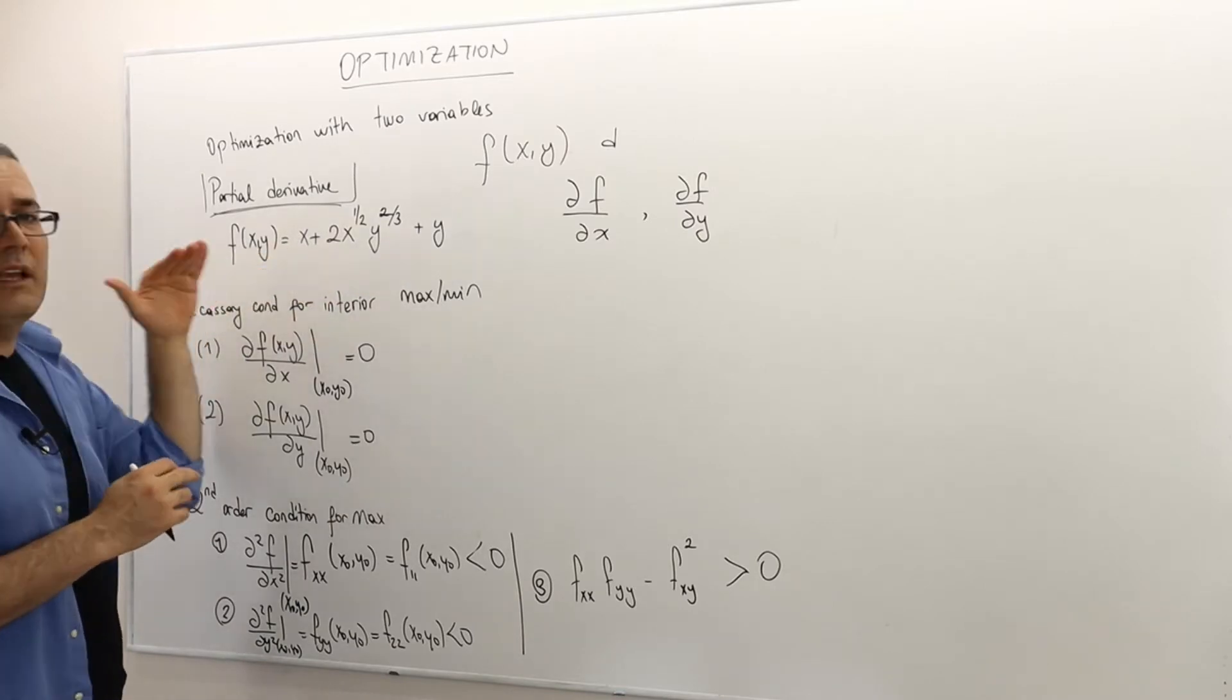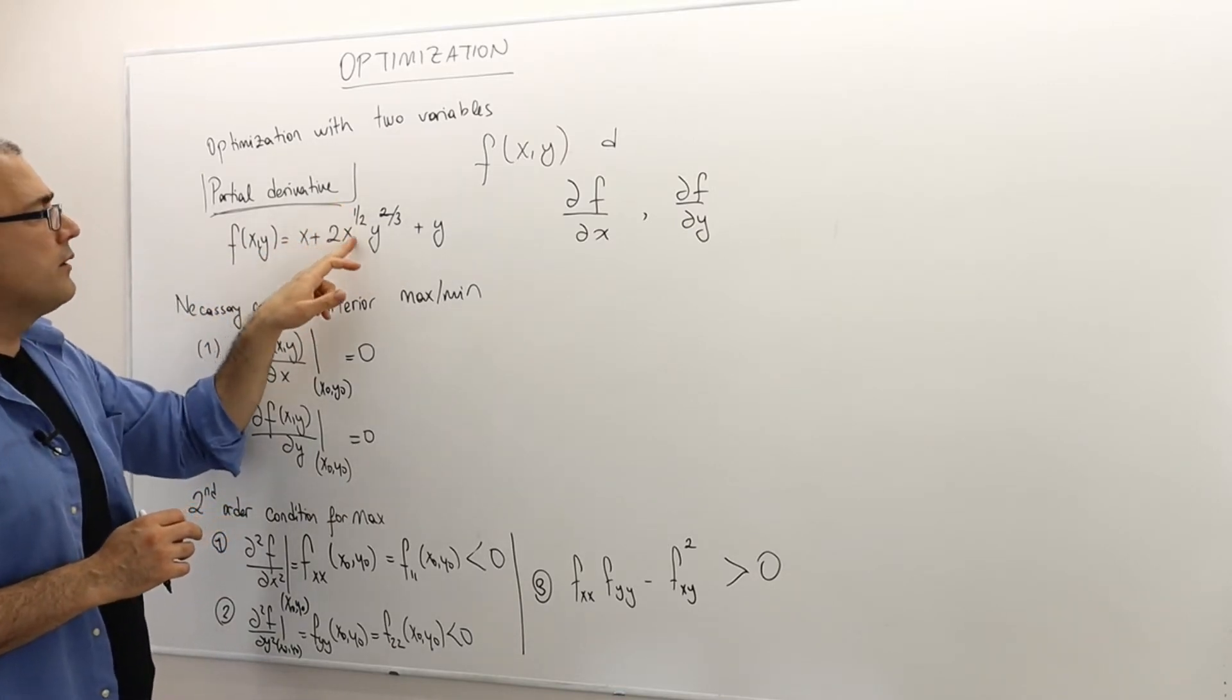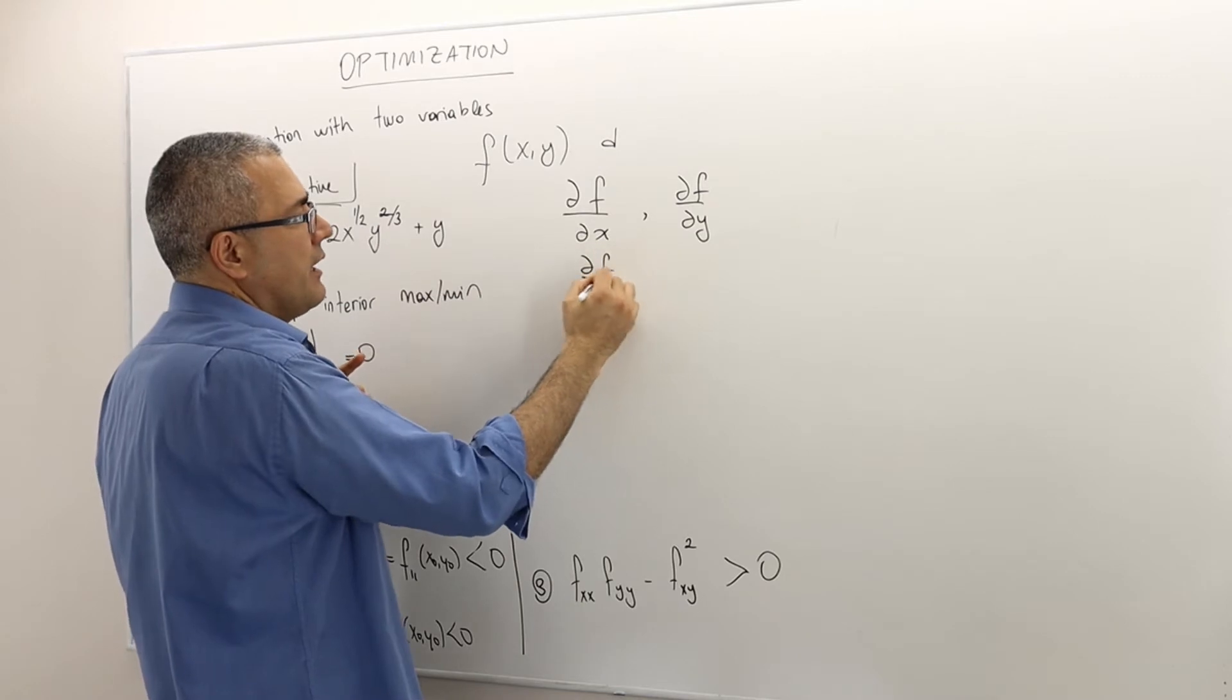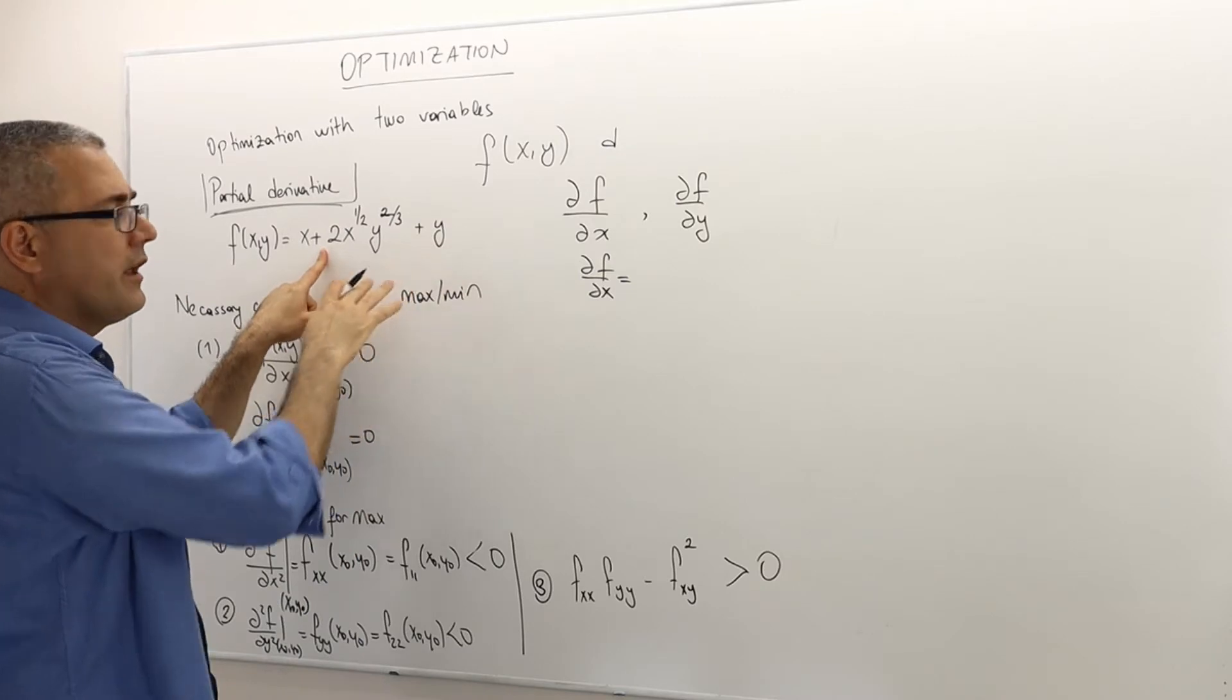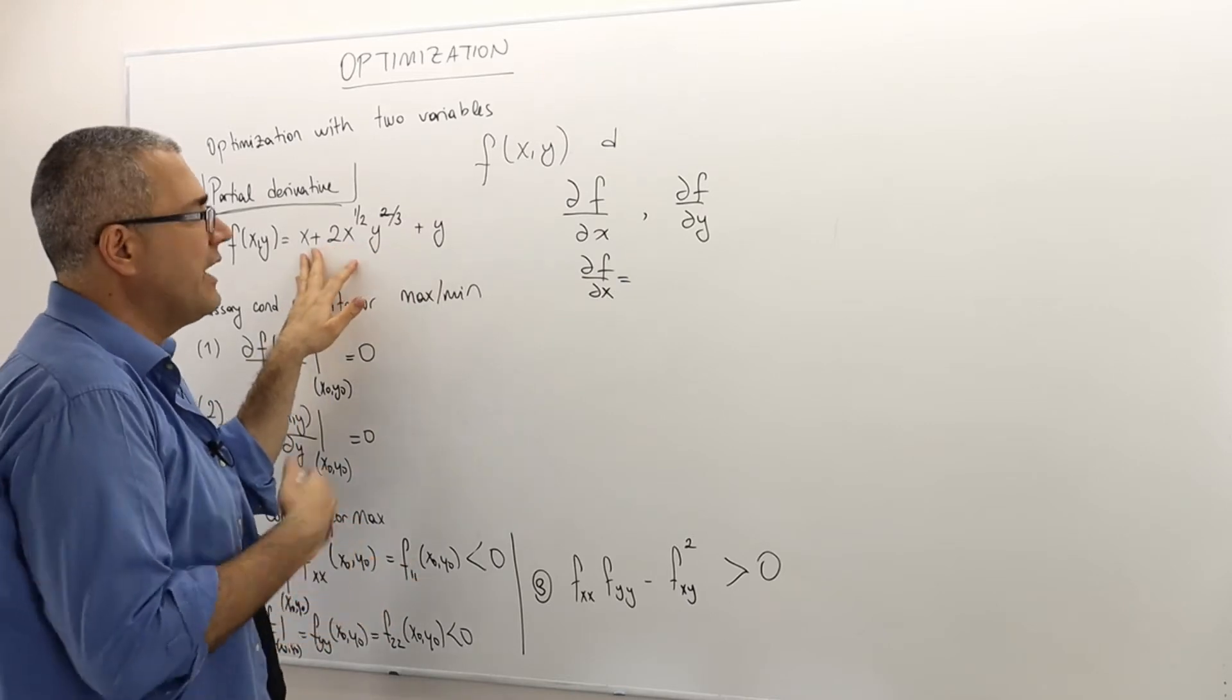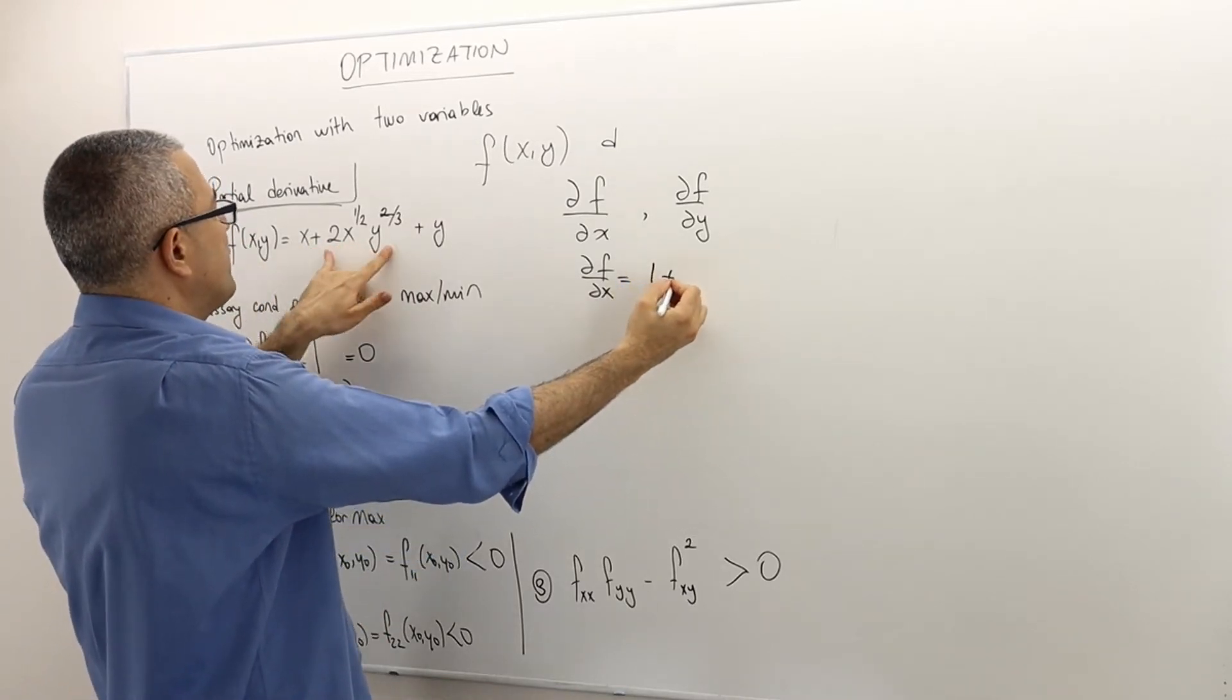So if this is my function example, x plus 2x to the power 1 half and y to the power 2 third plus y. So the del f del x, the partial derivative with respect to x is basically treat y as if it is a constant. And then therefore, this is just a function with one variable and take its derivative with respect to x.